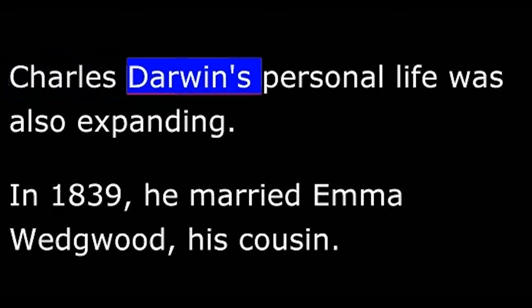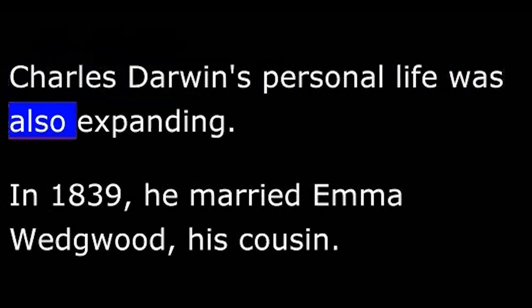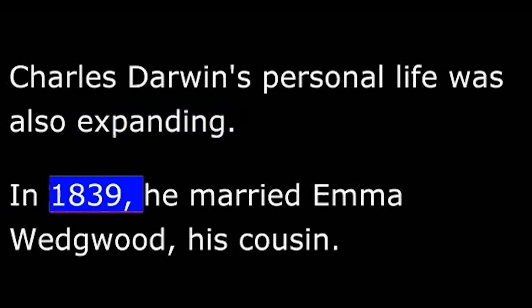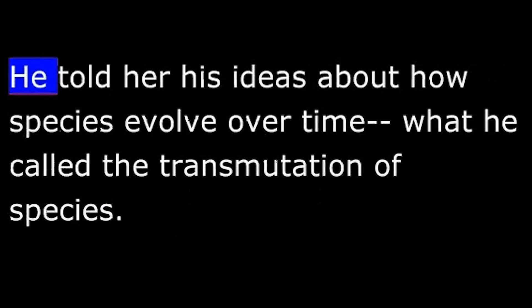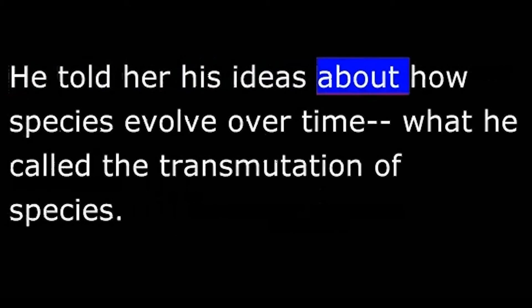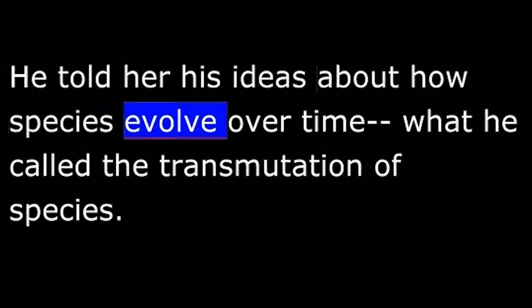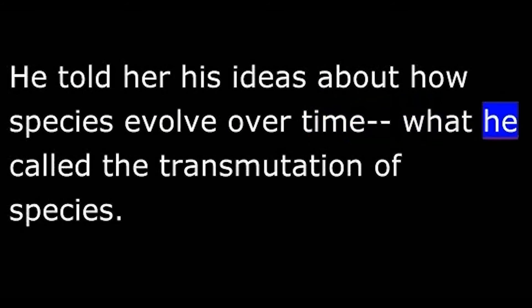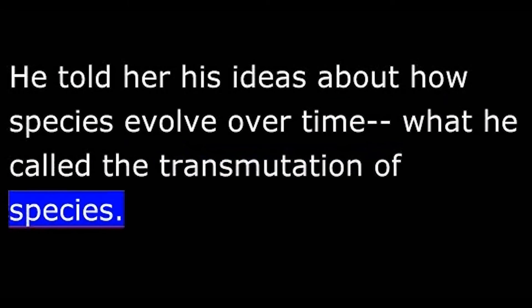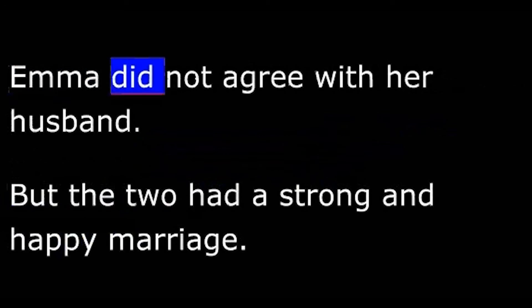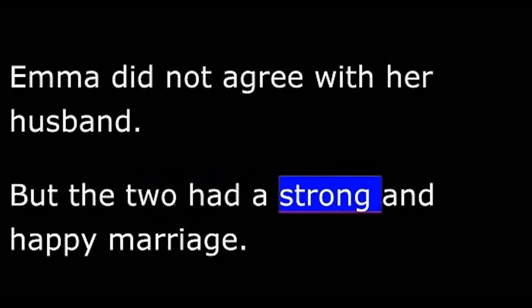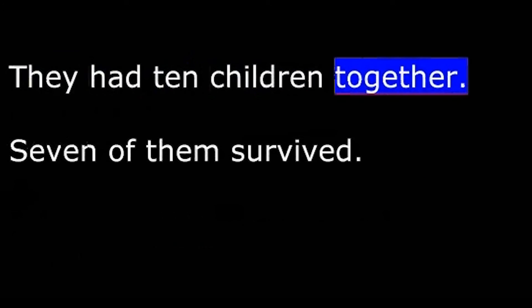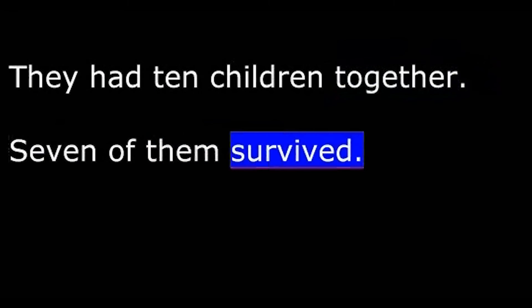Charles Darwin's personal life was also expanding. In 1839, he married Emma Wedgwood, his cousin. He told her his ideas about how species evolve over time, what he called the transmutation of species. Emma did not agree with her husband, but the two had a strong and happy marriage. They had ten children together, seven of them survived.